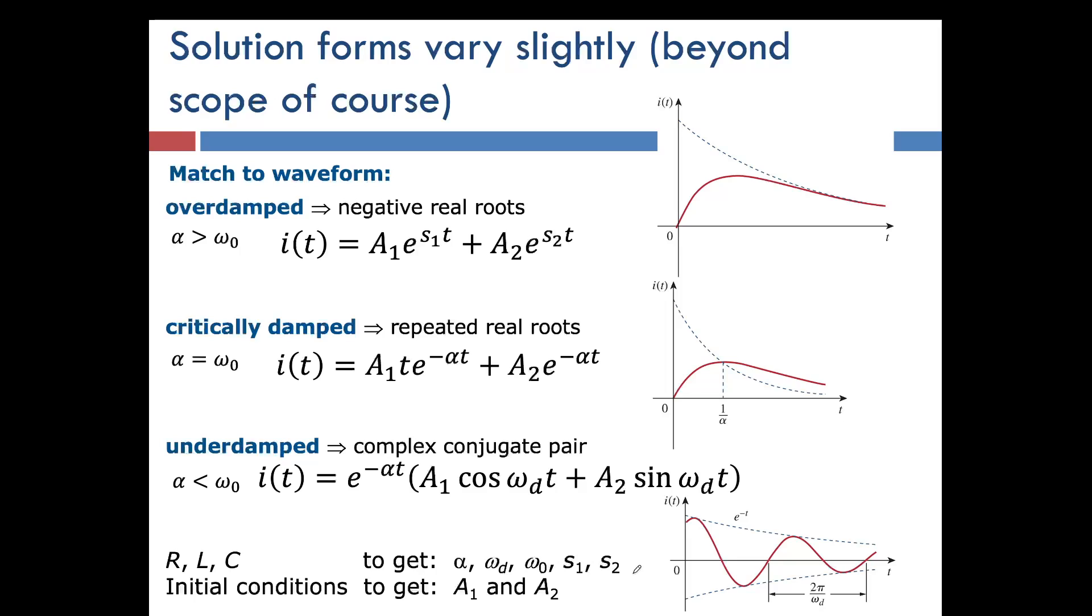So here's the solution forms that could exist depending on your values of alpha and omega. So if you have alpha greater than omega, that's the overdamped solution. The overdamped solution looks like this. This is the case that we expected based on our guess of Ae^(st). It's a little beyond a circuits class, but basically because we had two different roots, we can guess that the full solution is a superposition of the solution from the two different roots. So root S1 and root S2.